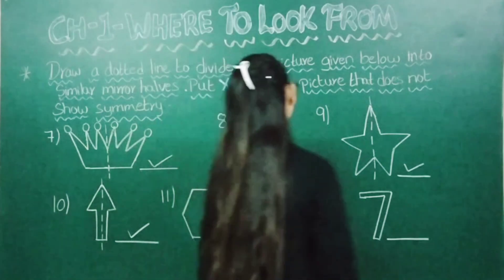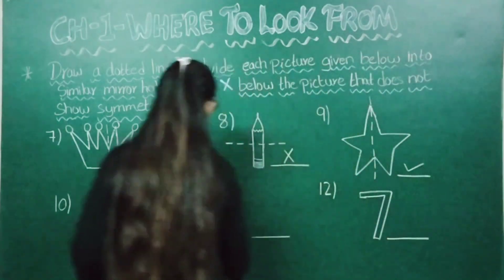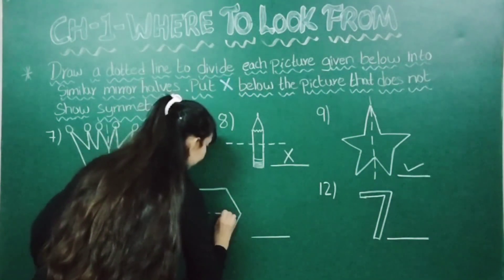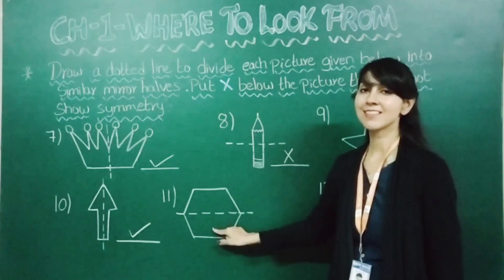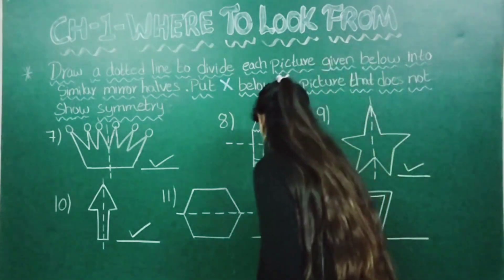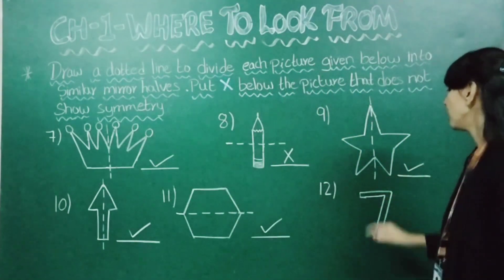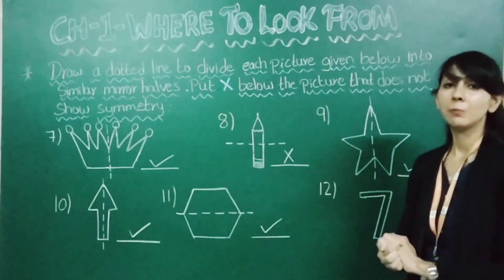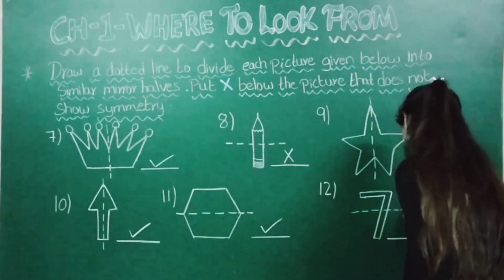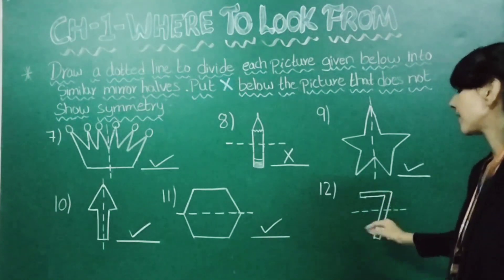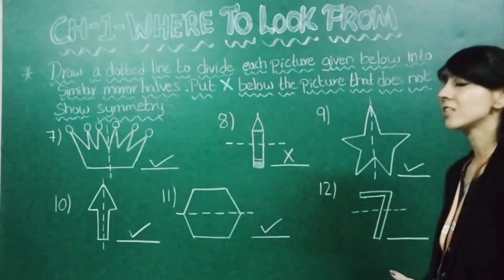Next shape is a hexagon. Drawing the dotted line — do both sides look equal? Yes. So we put a tick. Moving to the next one — which number is this? Number 7. Drawing the dotted line — do both sides look equal? No, they are unequal. So here we put a cross.